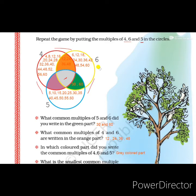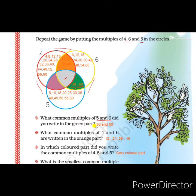The question asks: what common multiples of 5 and 6 did you write in the green part? From the circles, we found that only 30 and 60 are the common multiples of 5 and 6 — these numbers appear in both circles. So the answer to write in the green part is 30 and 60.